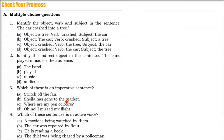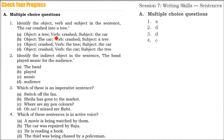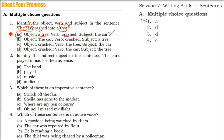So this is how paragraphs are made — group of sentences having the same theme, idea, and thought. Now let us take a question and answer. Identify the object, verb, and subject in the sentence: The car crashed into a tree. The car is the subject, tree is the object, crashed is the verb. In the multiple choice question, the correct answer is A.